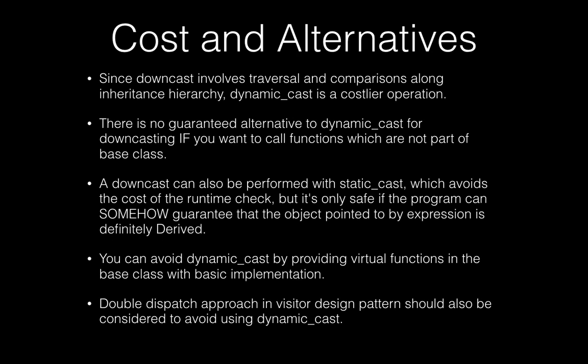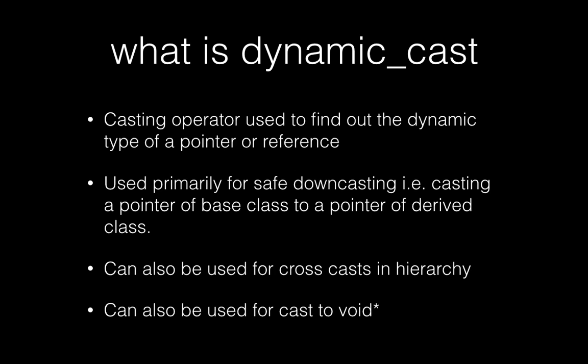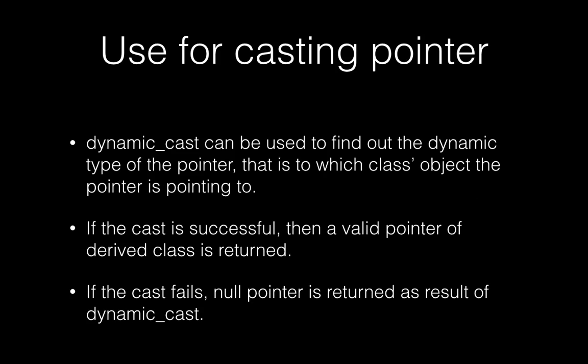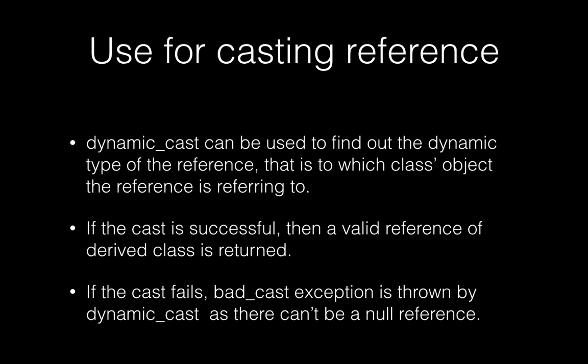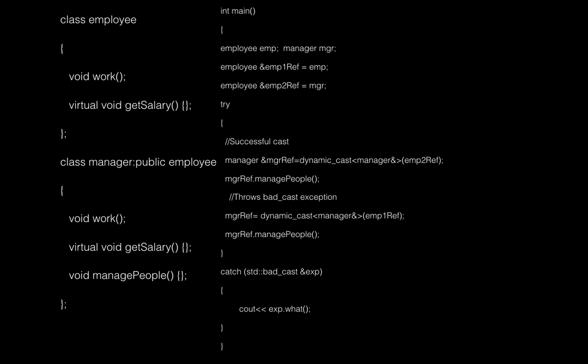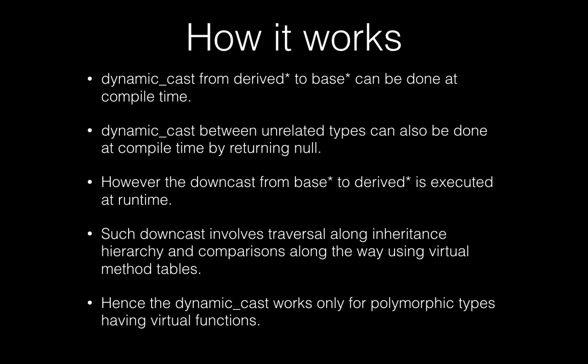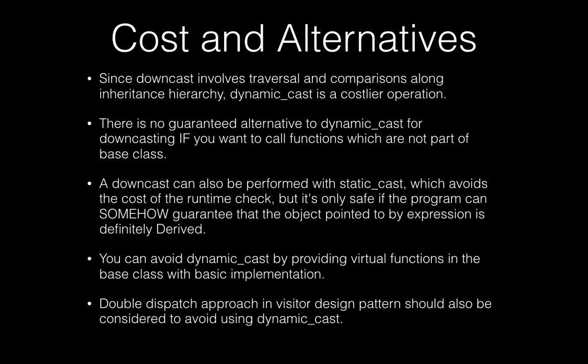So these are the five key things we covered: what dynamic cast is, how to use it for pointers, how to use it for references, how it works internally, what the cost is, and what the alternatives are. Thanks for watching, and I hope this helps.